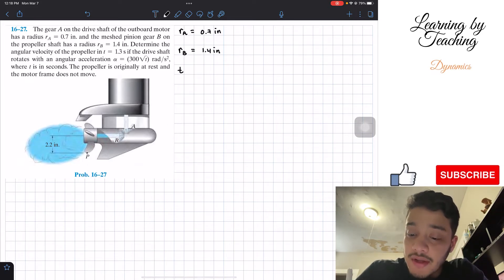The time that I'm interested in, I'm going to call it t1, is equal to 1.3 seconds. The alpha, or the acceleration, is equal to 300 square root of t in radians per second squared.